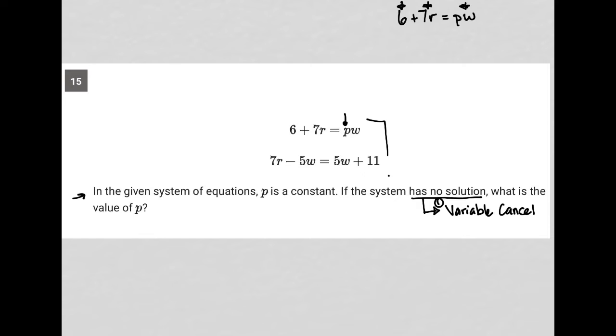Where do I want my W? I want W on the right-hand side, so I'll add 5W to both sides. I want my number on the left-hand side, so I'll subtract 11 from both sides. Doing that, I get -11 + 7R = 10W.